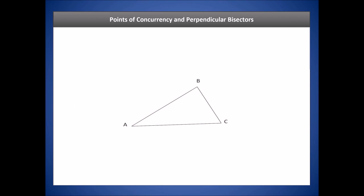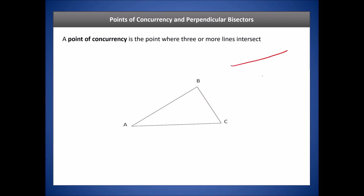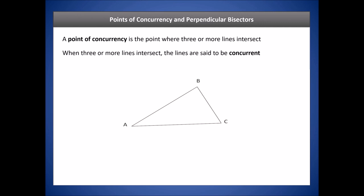Let's describe the point of concurrency as it relates to perpendicular bisectors. A point of concurrency is the point where three or more lines intersect. Two non-parallel lines intersect at one point, but three or more lines could intersect at multiple different points. What we're interested in are three or more lines that all intersect at the same single point — that is the point of concurrency, where three or more lines agree.